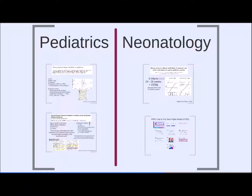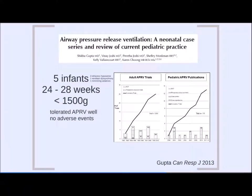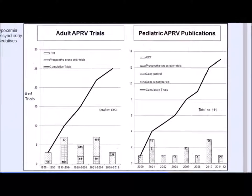In neonates, a small study of 5 infants at 24–28 weeks gestation, under 1.5 kg, found that these infants tolerated APRV well with no adverse events — reassuring for safety. What I found most interesting was a table demonstrating the number of pediatric APRV publications compared with adult APRV publications, showing how limited the pediatric literature remains in this area.